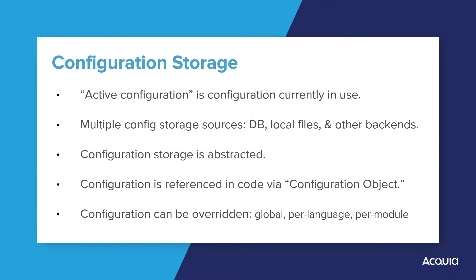Configuration is divided into individual objects, each of which has a unique name or key. Some modules will have only one configuration object — typically it's called myModule.settings. Some modules will have many configuration objects. The RSVPList module we are creating will have one configuration object called RSVPList.settings.